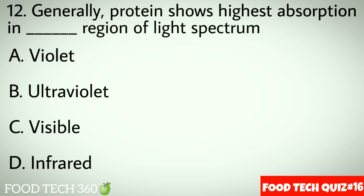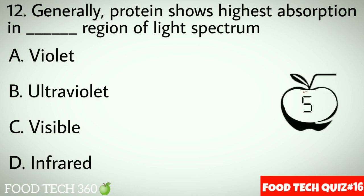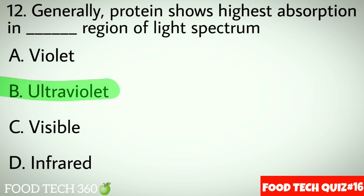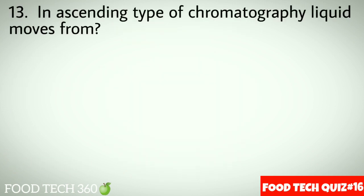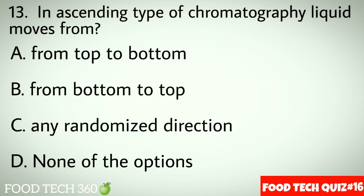Question No.12: Generally protein shows highest absorption in dash region of light spectrum. Options A: Violet. B: Ultraviolet. C: Visible. D: Infrared. Correct answer B: Ultraviolet.